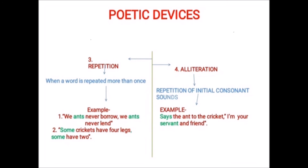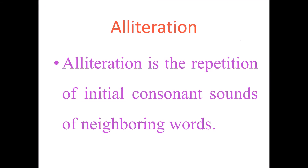Students, the fourth poetic device is alliteration. Alliteration means repetition of initial consonant sounds. Look at the example sentence: 'Says the ant to the cricket, I am your servant and friend.' In this line, 'says' and 'servant' are alliterated words. Alliteration is the repetition of initial consonant sounds of neighbouring words, or in other words, the repetition of beginning consonant sounds.